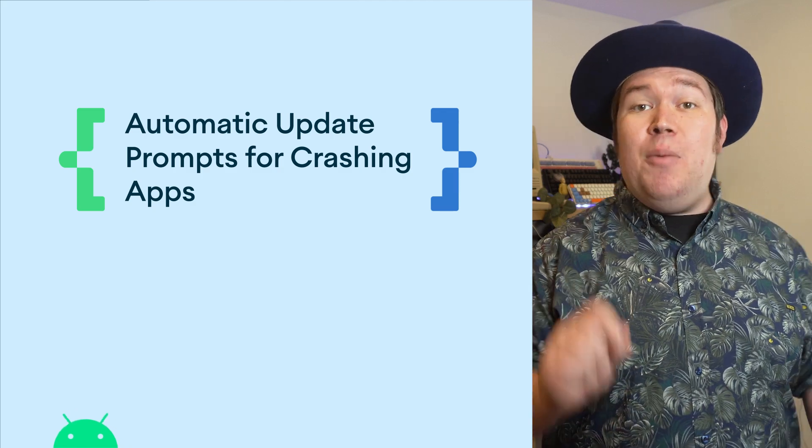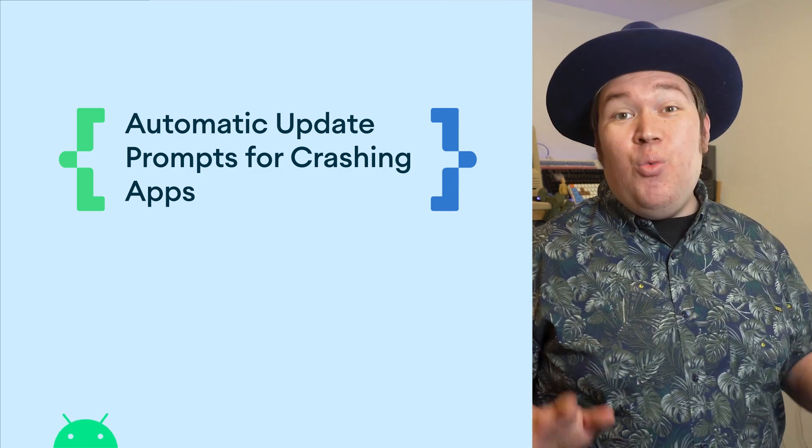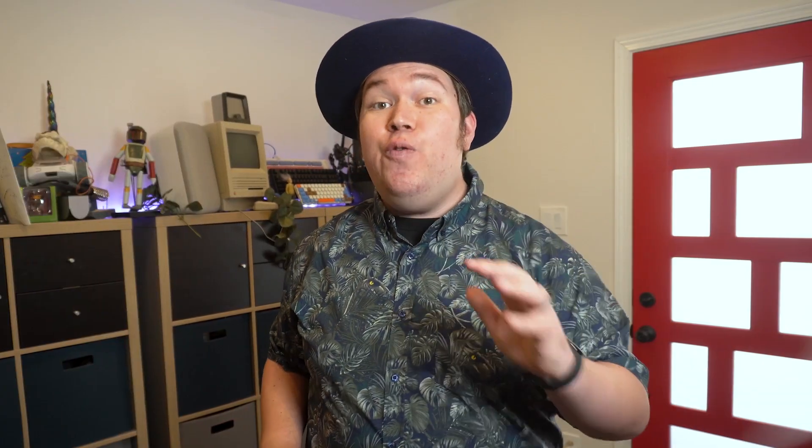There are new automatic update prompts for crashing apps. We are excited to announce a new feature that will help you increase the rollout velocity of app updates and meet Play's quality bar. On phones and tablets running Android 7.0, SDK level 24, and above, the Play Store will prompt users to update your app if it crashes in the foreground and a more stable version is available. This will reduce your user-perceived crash rate. If you'd like to know more, check out the blog.